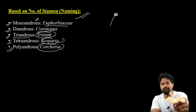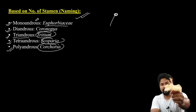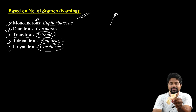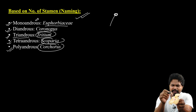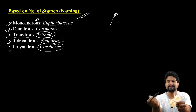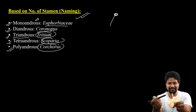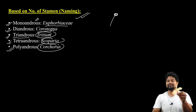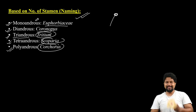So I am going to show you this flower. If you have a monoandrous condition, diandrous, triandrous — this is the polyandrous condition because it has a lot of stamens. So this is the polyandrous condition. This classification will help you to identify the flower.